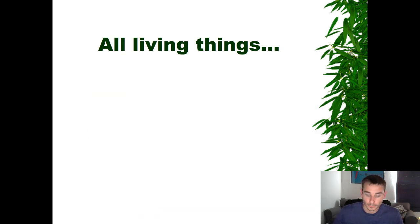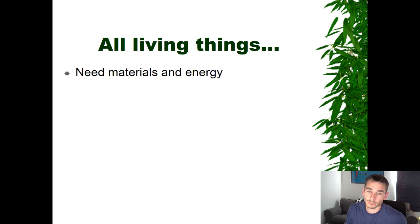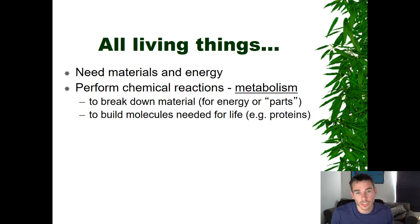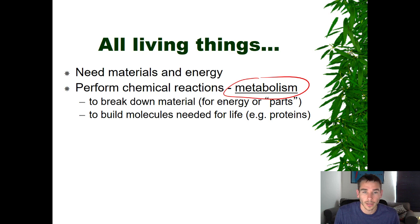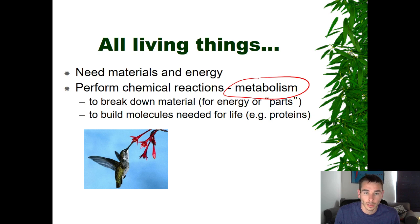The next characteristic is that all living things need material and energy. They need material and energy for many reasons. I want to introduce the term metabolism: metabolism is any chemical reaction that a living thing performs, and you need material and energy to carry out metabolism. Hummingbirds have notoriously fast metabolisms — they're doing a lot of chemical reactions very quickly, so they need a lot of materials and resources.